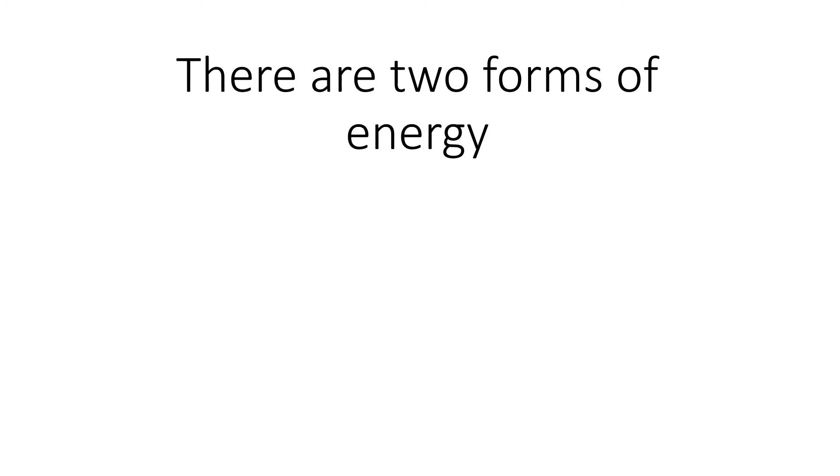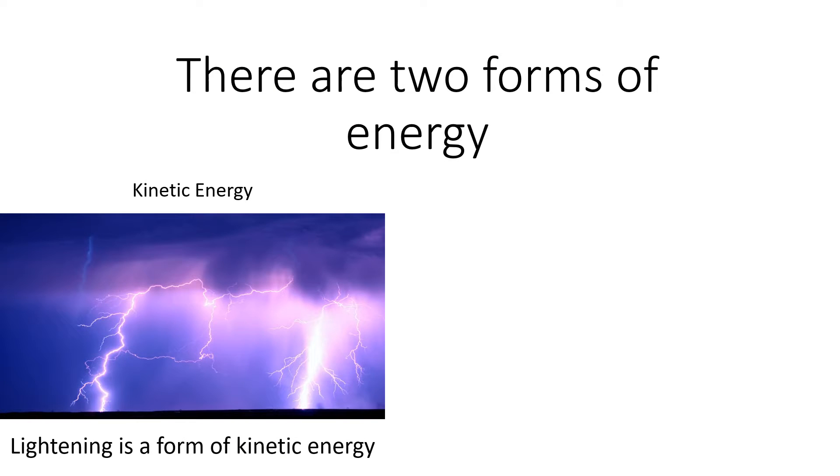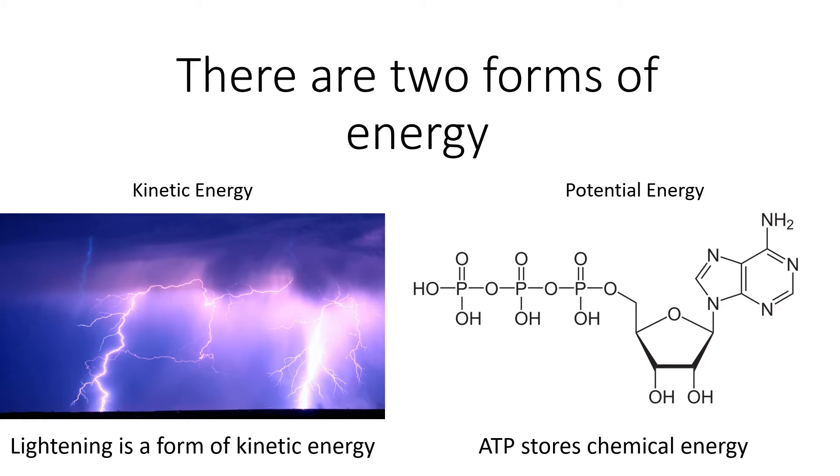Most of us know the two forms of energy. The first one, of course, is kinetic energy, which lightning is a form of kinetic energy, and the other one is potential energy, and ATP is an example of energy that's stored. We're going to go into more depth about exactly what kinetic energy is and potential energy.